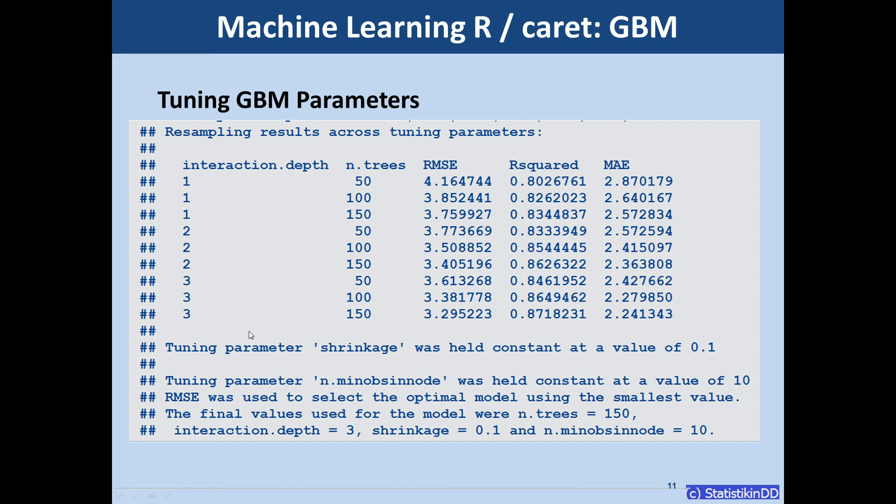And the best model here is in the last line with three splits per tree and 150 trees in total. And this gives us the root mean squared error that we saw of 3.30 if we round it.